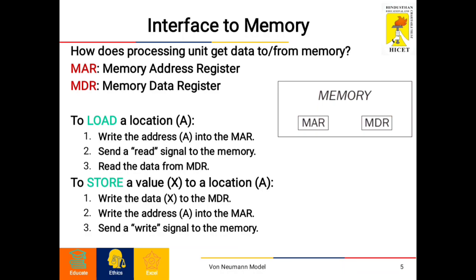The interface to memory addresses how the processing unit gets data to or from memory. This is done via the MAR (memory address register) and MDR (memory data register), both of which come under memory. To load a location A, write the address A into the MAR, send a read signal to the memory, then read the data from the MDR.